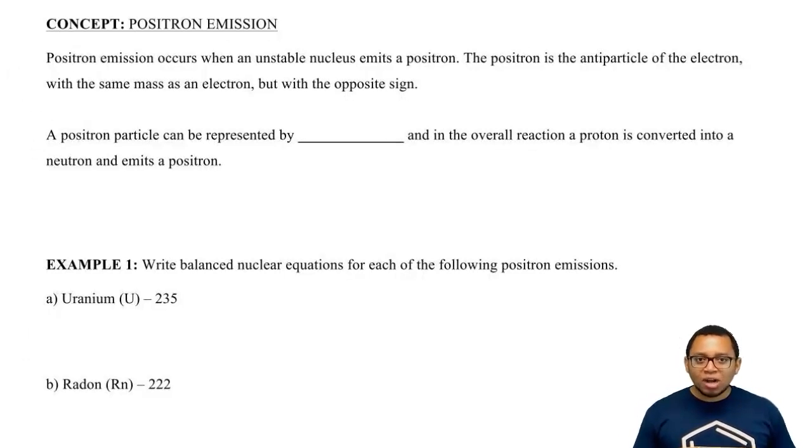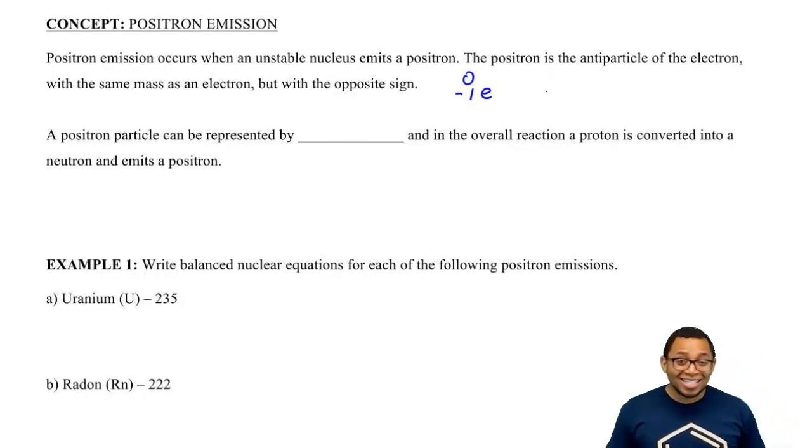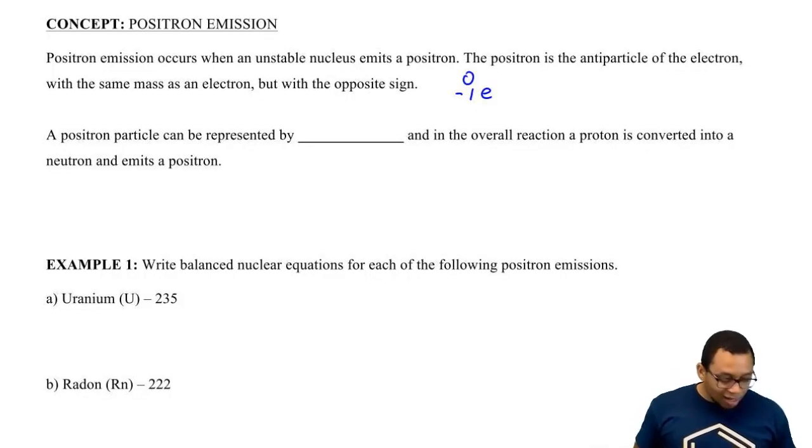What's a positron? A positron is an antiparticle of the electron. Remember, the electron is represented by this. A positron is the opposite of that. It looks like an electron, but instead of having a negative sign, it will have the opposite sign. So it will be a positive electron.